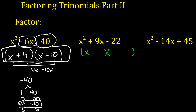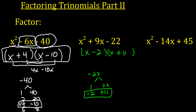To get x squared, we need x times x. The factors of 22 are 1 and 22, and 2 and 11. We know it's going to multiply to negative 22, so one of these has to be negative and one positive. We want it to add to 9, so it's going to be plus 11, negative 2 — giving us x minus 2, x plus 11. If you're wondering which order they go in, it doesn't matter.